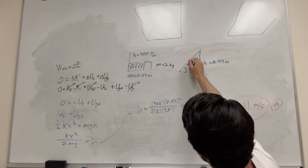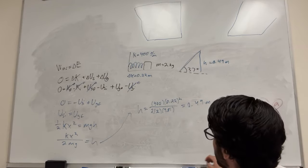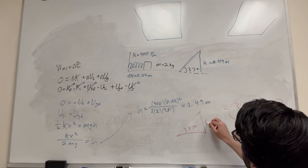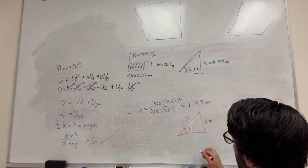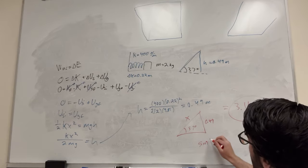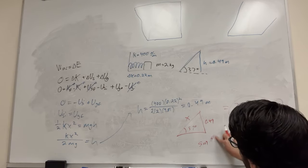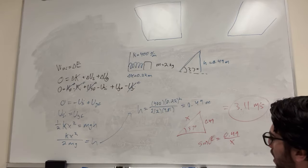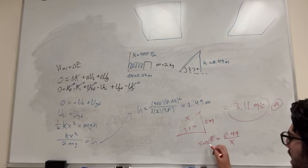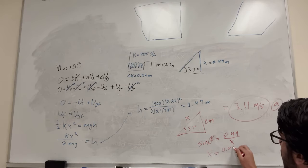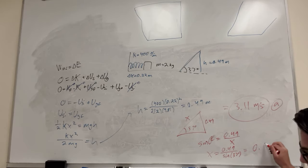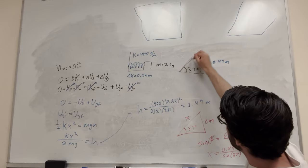So 0.49 meters is how far vertically it goes — that's the height. What we're trying to find is how far up the ramp it goes. We're going to use sine for that. Drawing our triangle: the angle is 37 degrees, the opposite side (vertical height) is 0.49 m, and we're trying to find the hypotenuse x — the distance along the ramp. Sine of theta equals opposite over hypotenuse, so x equals 0.49 divided by sine of 37 degrees. Plugging that in, you get that it goes 0.82 meters up the ramp.